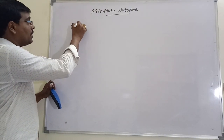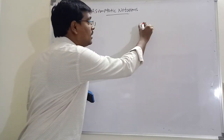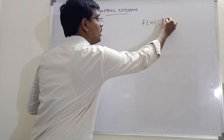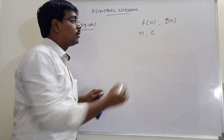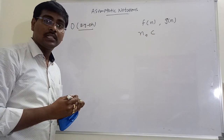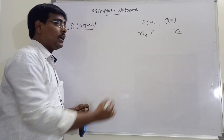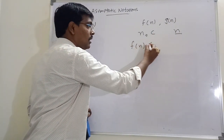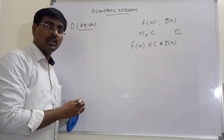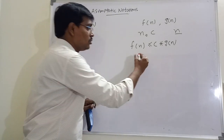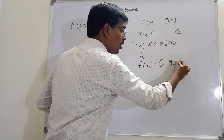The first notation is Big O notation. In Big O notation, consider two functions f(n) and g(n), and two integers n0 and c. Here c is a constant, n0 is some value of input n. And if the function f(n) is less than or equal to c into g(n), then it is represented as f(n) = O(g(n)).